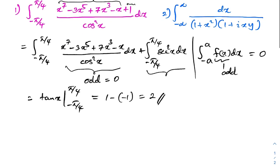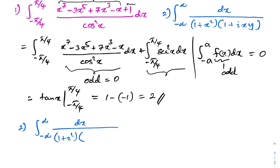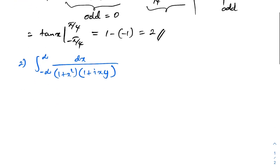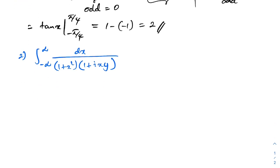Now we are going to evaluate our second integral: the integral from -∞ to ∞ of dx divided by (1 + x²)(1 + ixy). This is another interesting integral.